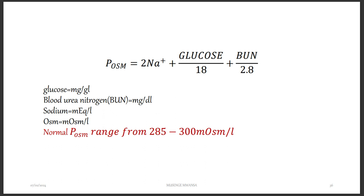Plasma is ECF, not ICF. So if the fluid outside the cell is about 285 to 300 milliosmoles — let's say 300 — that's the normal. The fluid inside the cells should be of the same concentration. Otherwise, if the ECF concentration is higher, water will move from outside to inside the cell; if lower, the opposite will happen. That is why concentration must be equal inside and outside the cell.